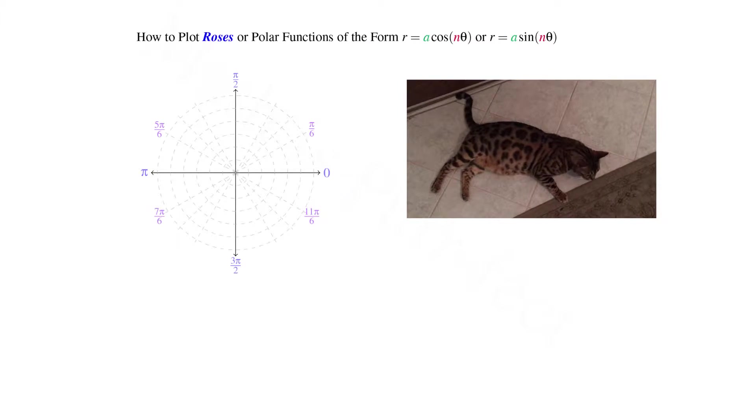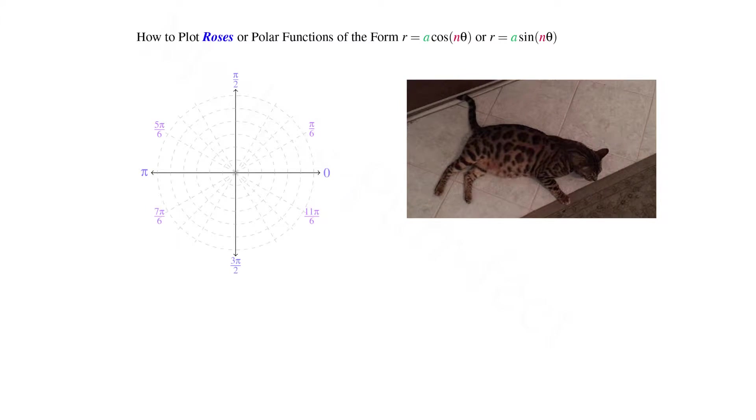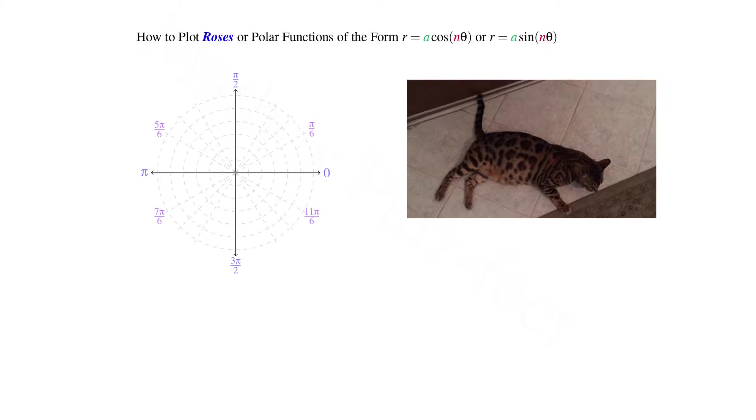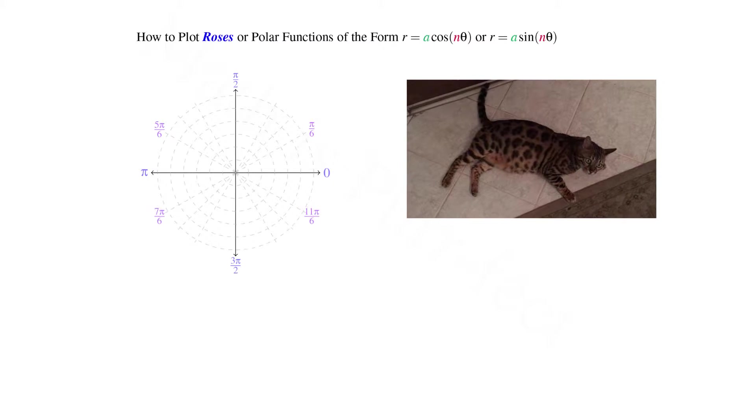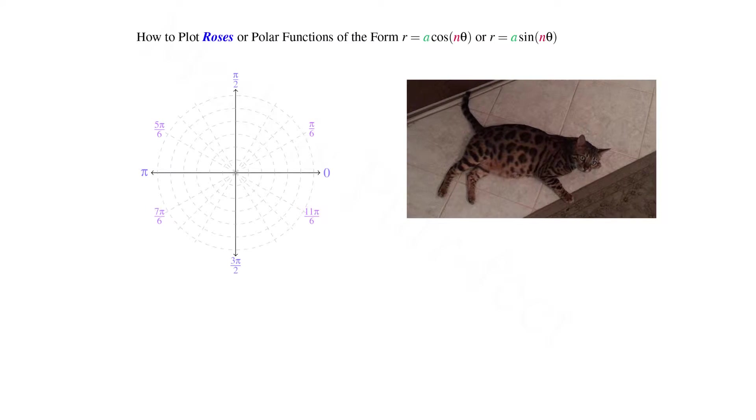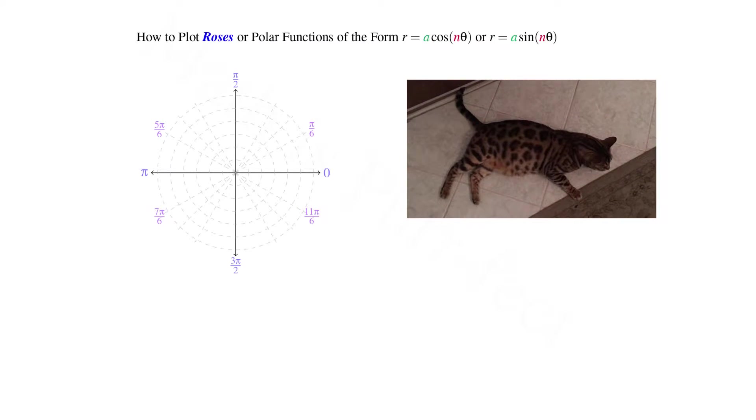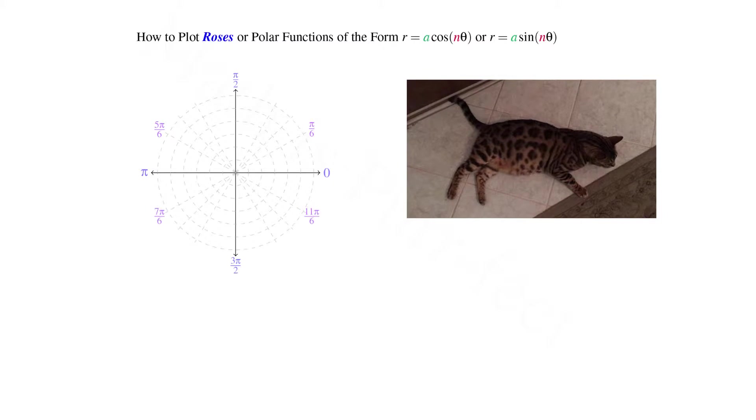Those angles which measure 30 degrees or π/6 radians from the X or horizontal axis are given by π/6, 5π/6, 7π/6, and 11π/6 respectively.